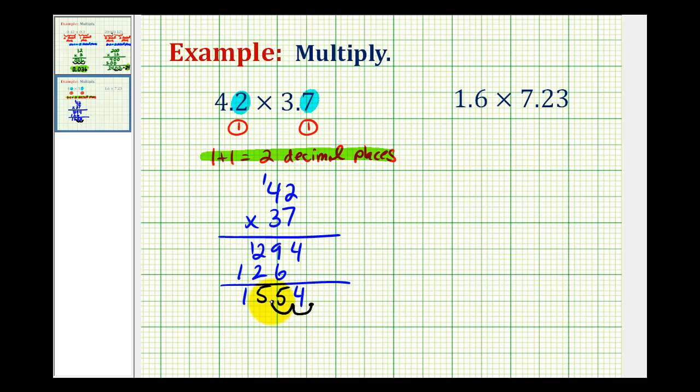One, two. So the product of the given problem containing decimals would be fifteen point five four, or fifteen and fifty-four hundredths.